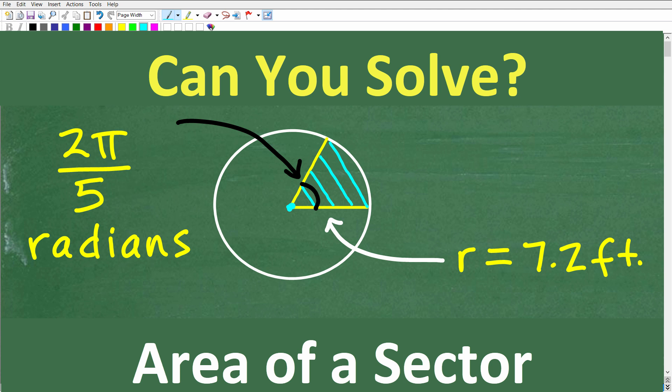The objective is we want to find the area of a sector of a circle. Effectively, that is basically like a little pizza slice part of the circle as represented right here.